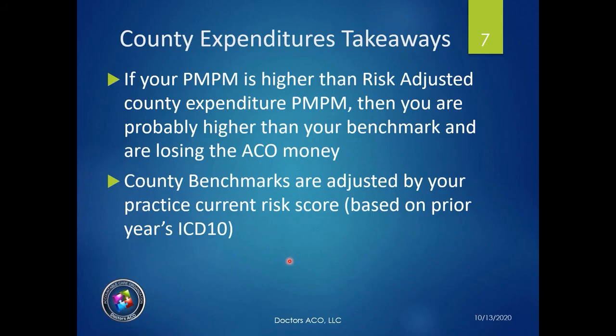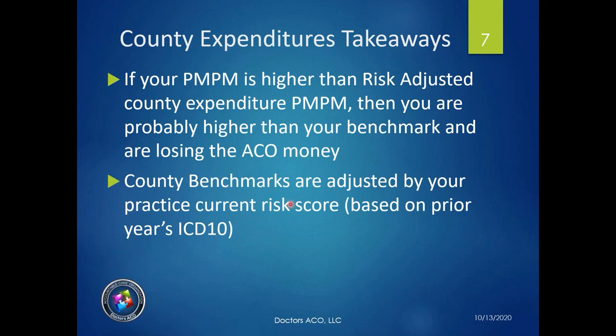County expenditure takeaways: if your PMPM — per member per month — expense is higher than your risk-adjusted county expenditure, you are probably above your benchmark and losing money for the ACO. If your PMPM is lower than your risk-adjusted county expenditures, you're in a good position to save in the ACO. Look at the county expenditure report inside Blue Sky.